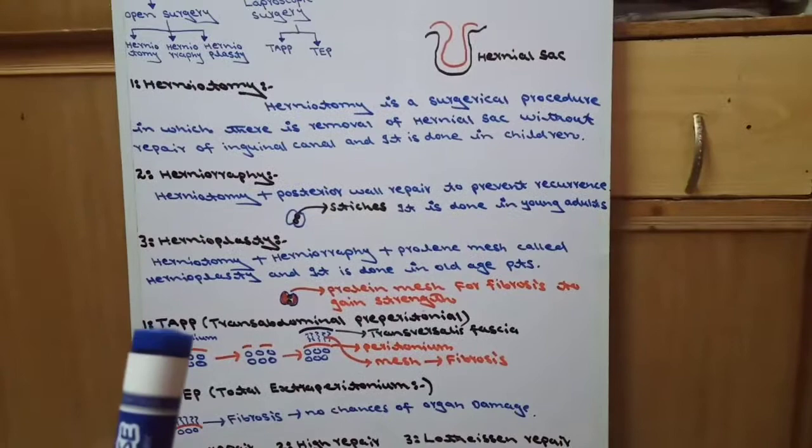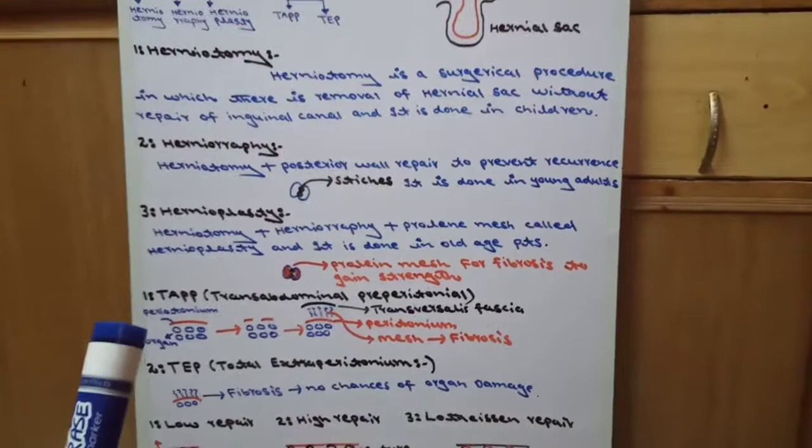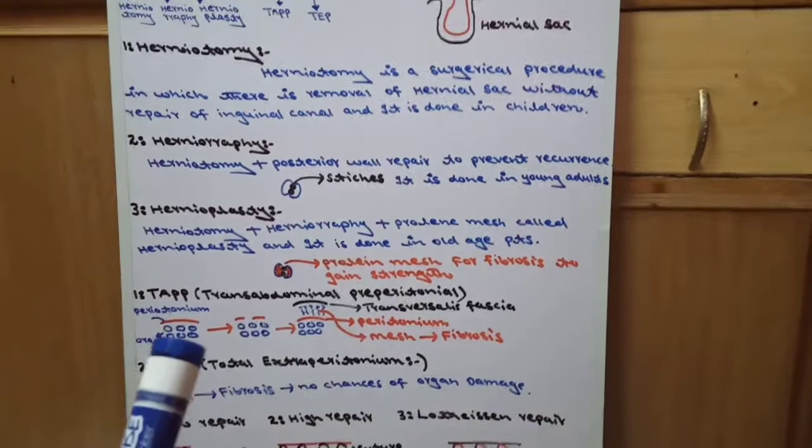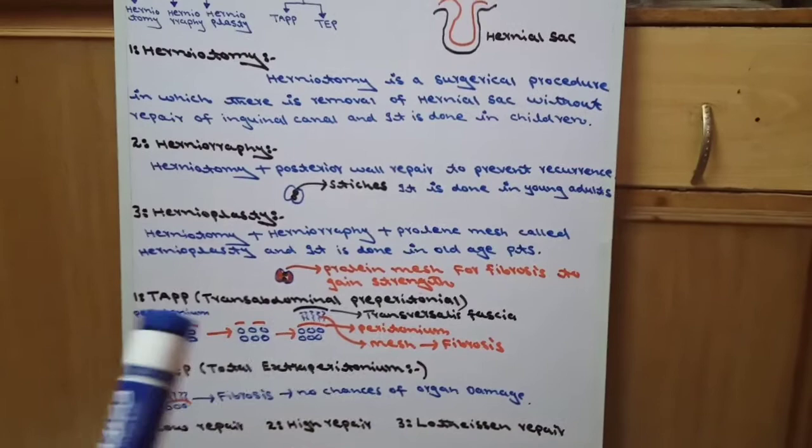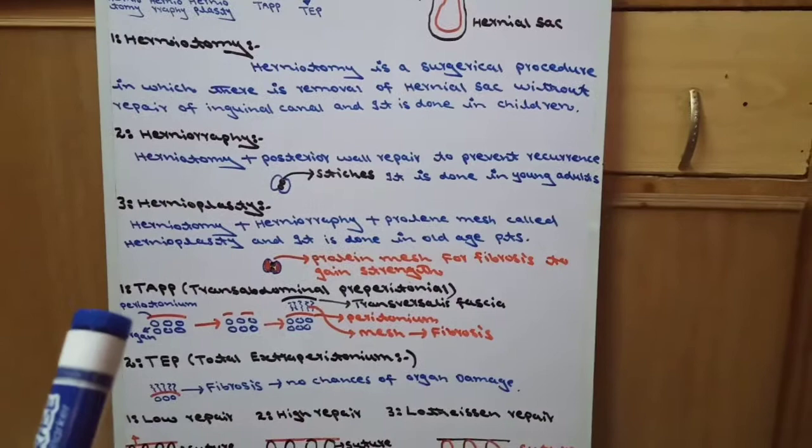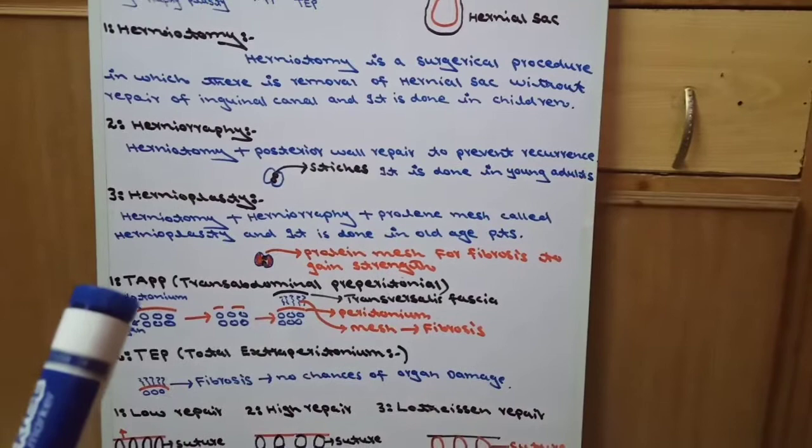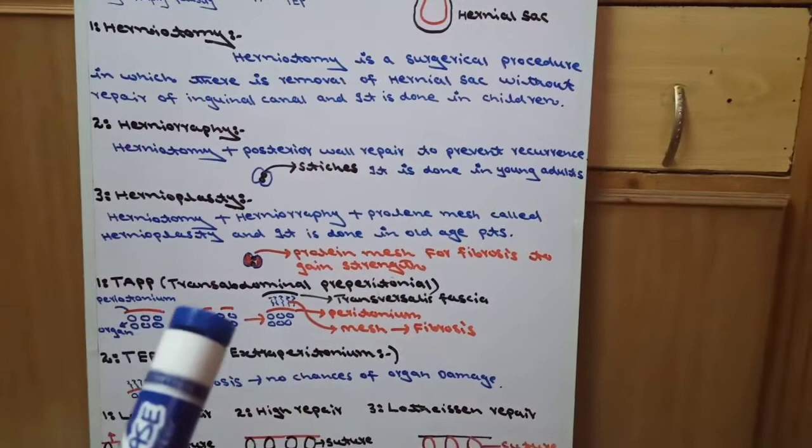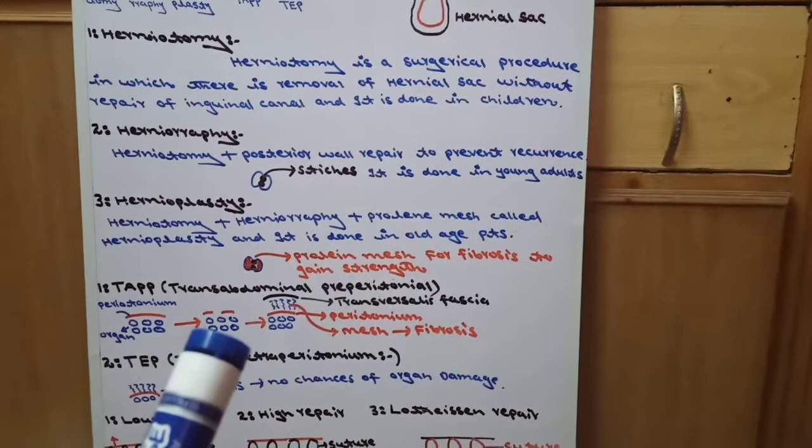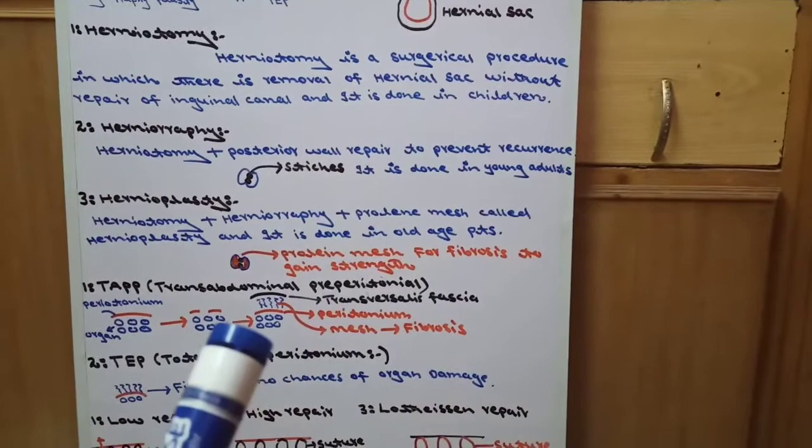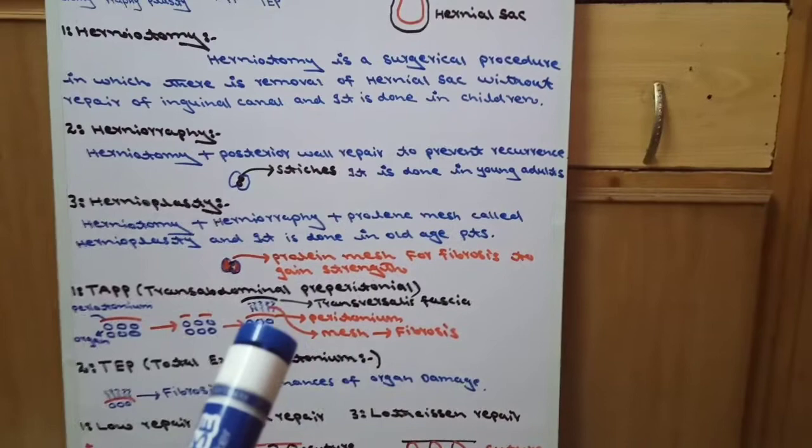Now we come to laparoscopic surgery. First method is TAPP - trans abdominal preperitoneal. In this, the green lines show our body organs, and the red line shows peritoneum. In TAPP, when we give incision and reach the peritoneum, we also incise the peritoneum and open the body organs. After opening the body organs, we close them again, and then repair the peritoneum layer.